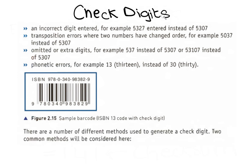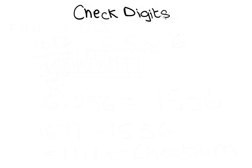There are a number of different methods used to generate a check digit. Two common methods will be considered here: ISBN 13 and modulo 11. First, let's talk about the ISBN 13 method. The check digit in ISBN 13 is the 13th digit in the number. We will consider two different calculations: the generation of the check digit, and the verification of the check digit, that is, a recalculation.